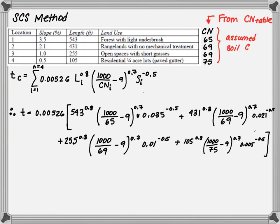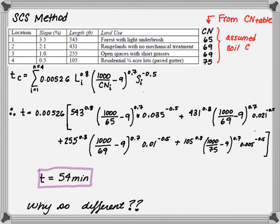So after we find the CN numbers, we plug it into the equation, realizing you find the time associated with each location and summing it, and we'll get a total travel time of 54 minutes. So why did the velocity method give us 111 and the SCS method give us 54? Realize that the SCS method is, again, agricultural, rural areas with very little development.